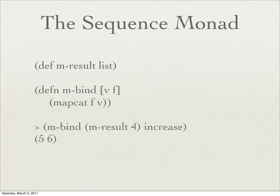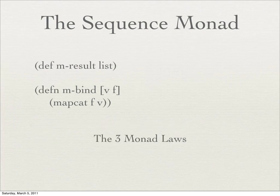Every monad has to have these two functions. But these two functions are not just any two functions — they have to interrelate with each other, and the way they interrelate is specified by the three monad laws. I am not going to try to go over the three monad laws right now, but look them up — hopefully after this talk you'll have some context to read those laws and understand them. You can't just take two functions and say 'I have a monad now.' Mresult and mbind have to work together to be a monad.